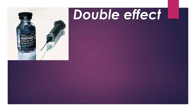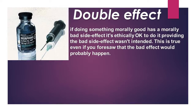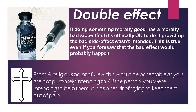One issue in the euthanasia debate is something called the double effect — when you do something morally good but it unfortunately has a bad side effect, even if that bad side effect was not intended, and even if you foresaw it might happen. Within Christianity, for example, if you give someone strong pain relief in hospital and it may end up killing the person, or you are unsure whether it was the pain relief or the illness, you were not trying to kill the person — you intended to help them and keep them out of pain. This is called the double effect and is not seen as a bad thing from a religious point of view.